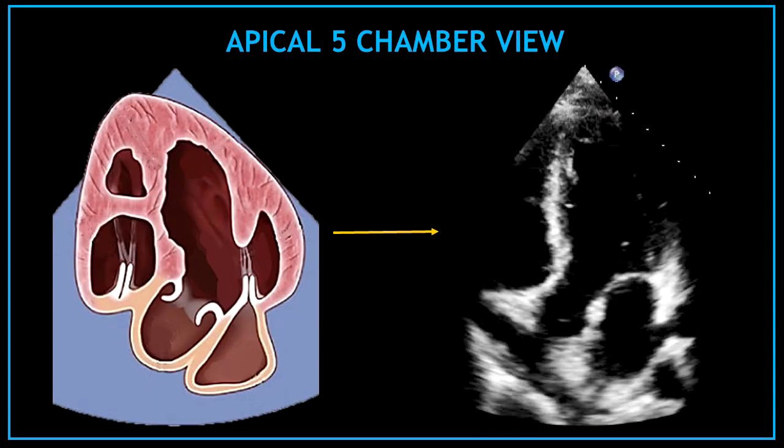This is the apical 5 chamber view and the structures visualized in this view are very similar to the ones visualized in the apical 4 chamber view. So I highly recommend you to start with that video before continuing with this one. However, let's review some of the same structures we can find in the apical 4 chamber view and then I'm going to show you what new structures we can find here in the apical 5 chamber view.